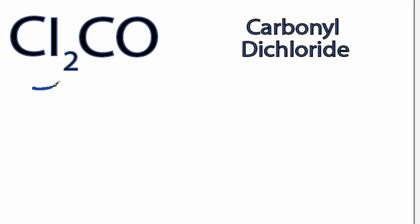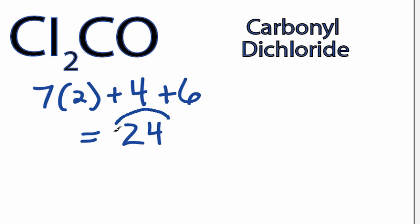For Cl2CO, we have 7 valence electrons for chlorine. We have 2 chlorines, plus 4 for carbon, and 6 for oxygen, for a total of 24 valence electrons.